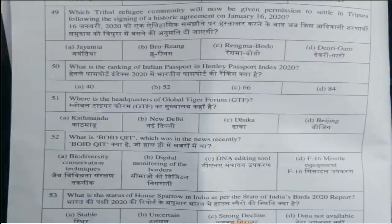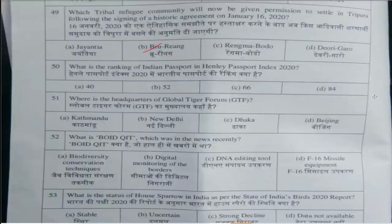Question number 49: Which tribal refugee community will now be given permission to settle in Tripura following the signing of the historic agreement on January 16, 2020? Answer is option B, Bru Reang. Fiftieth question: What is the ranking of the Indian passport in the Henley Passport Index 2020? Answer is option D, 84.